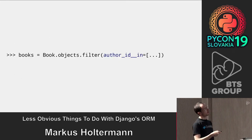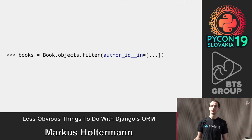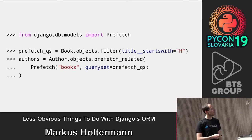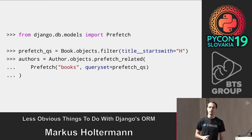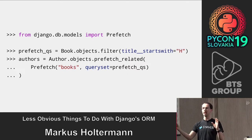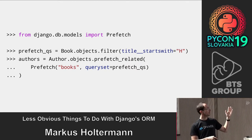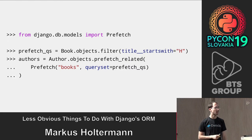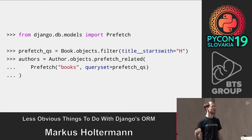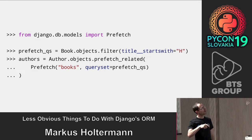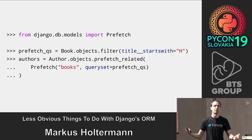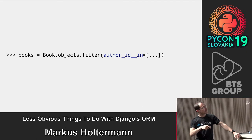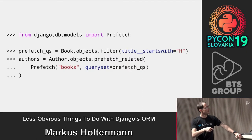You can also modify that prefetch query using the Prefetch object. Instead of just passing the relation string, you pass a Prefetch object where you can annotate it with a name and define a custom QuerySet. In this example, we filter books whose title starts with 'edge', and Django will include that filtering constraint in the prefetch query.